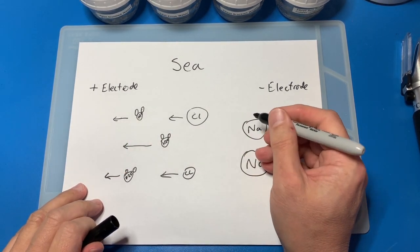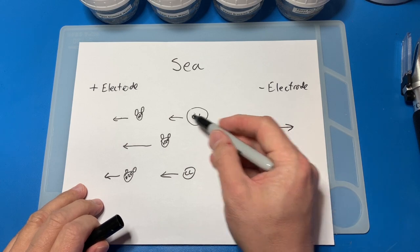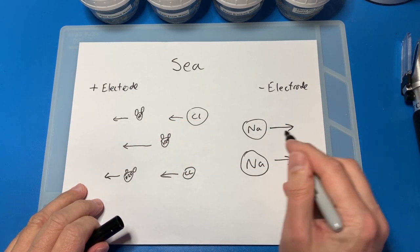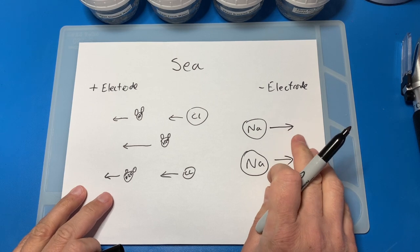And then the sodium chloride, the salt, gets split up and the chlorine heads over to the positive electrode and the sodium heads over to the negative electrode.